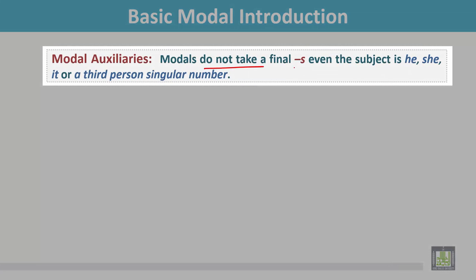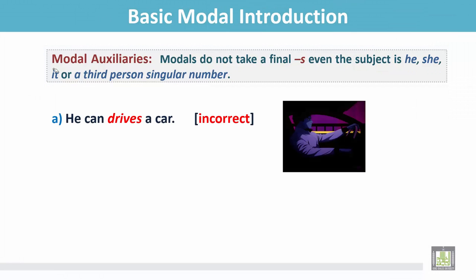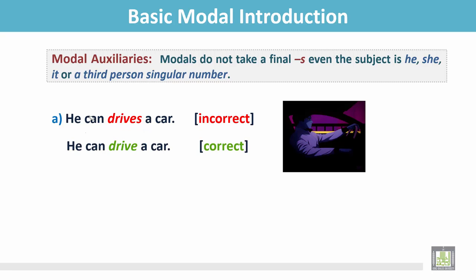Modals do not take a final S, even when the subject is he, she, it, or a third person singular number. See the examples. 'He can drives a car' — in this sentence, after the modal the main verb has a final S, so the sentence is incorrect. The correct sentence is 'He can drive a car,' where the verb doesn't take a final S even though the subject is he, a third person singular.